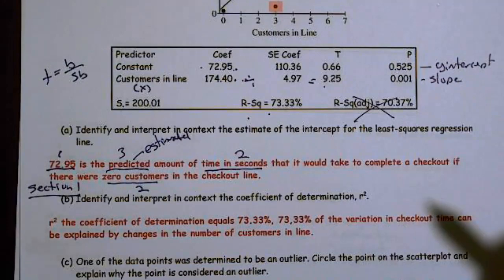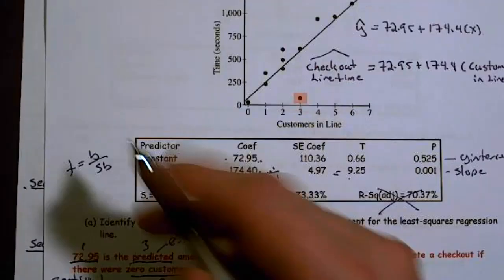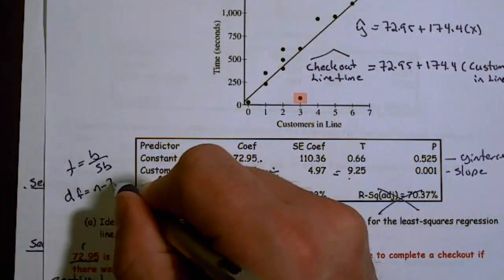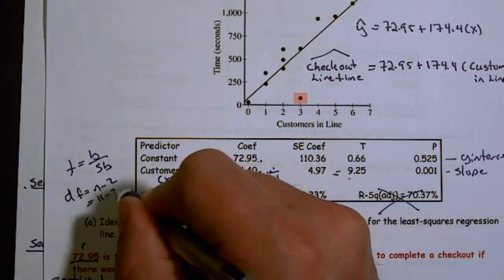And then, of course, don't forget, if we have 11 customers, because this is a regression, degrees of freedom is N minus 2, or in this case, 11 minus 2. Again, they did not ask those questions.